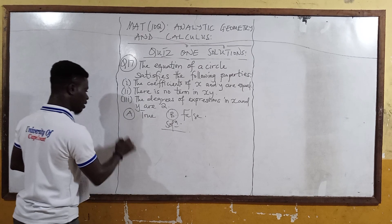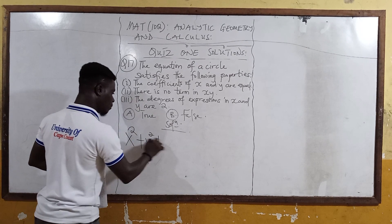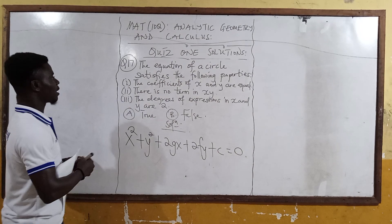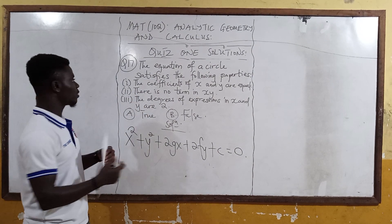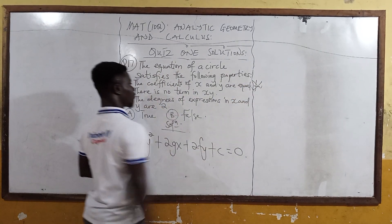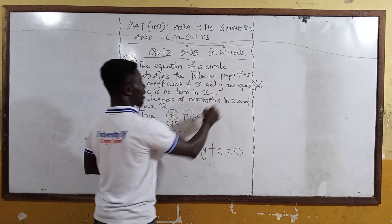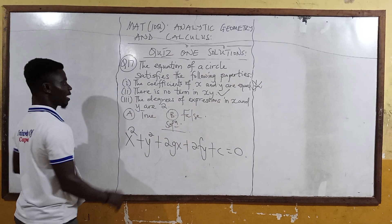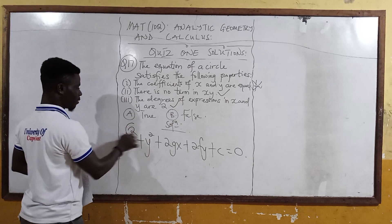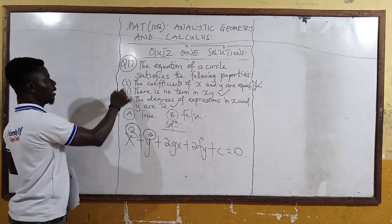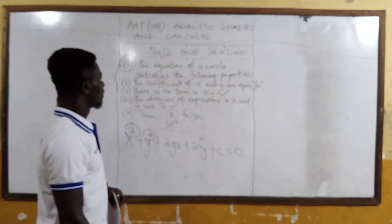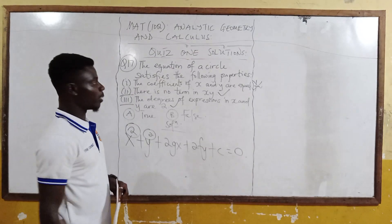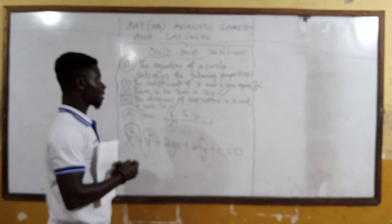Let's say the general equation of a circle is x squared plus y squared plus 2Gx plus 2Fy plus C equals 0. We are saying the coefficients of x squared and y squared are equal — that is true. There is no term in xy — that is also true. And the degrees of expressions in x and y are 2 — that is correct. So only properties I, II, and III all satisfy the equation of a circle — not just some. So the answer is false.